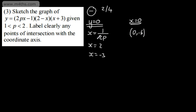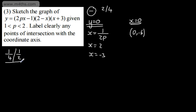We don't know whether the root 1/(2p) is going to come before or after 2. If p was just under 2, then 1/(2p) is going to be around a quarter. If p was just above 1, then this gives us one half. So this root is going to be somewhere between a quarter and a half.